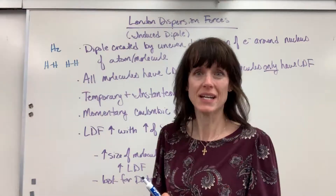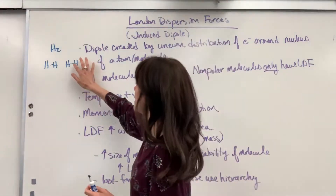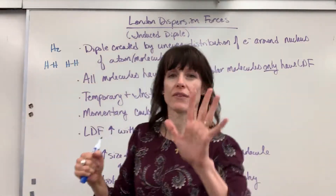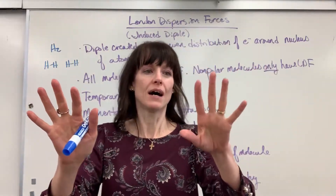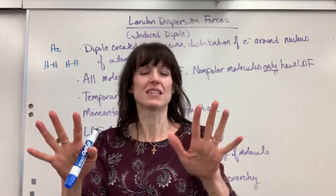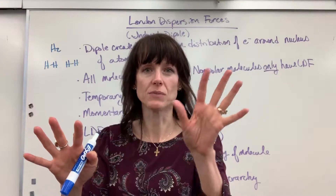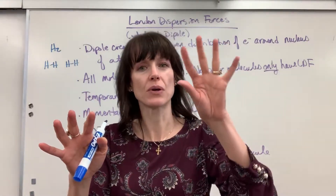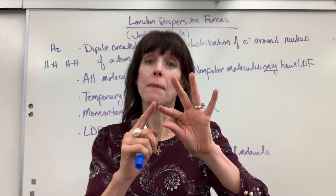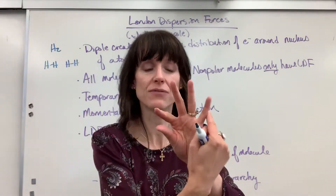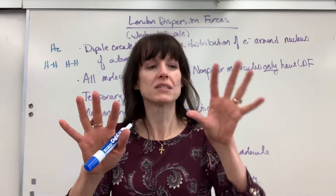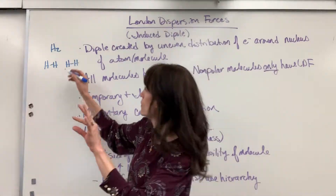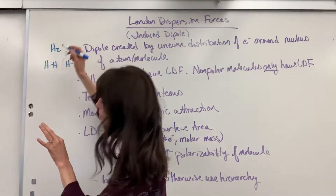A London dispersion force is where randomly the electrons are moving inside of that molecule. So I've got my hydrogen-hydrogen, my hydrogen-hydrogen, and I'll use my hands to describe this. I have electrons that are moving randomly, and then just out of randomness, the two electrons both go to one side. That's going to create a partial negative, and by default this is going to be a partial positive. Because those electrons randomly go to this side, we have a partial negative.